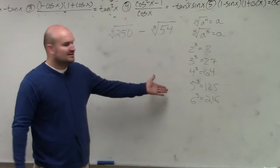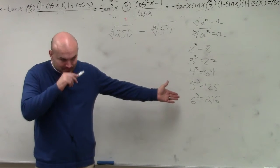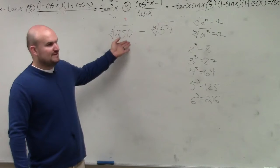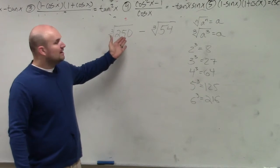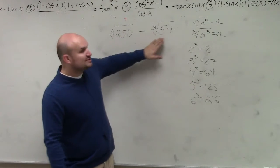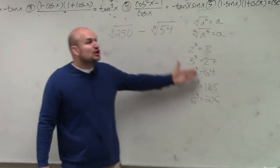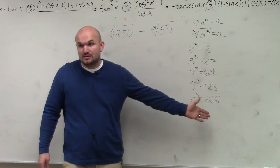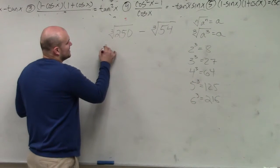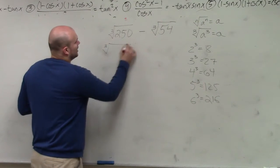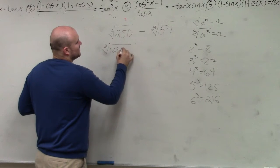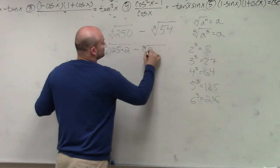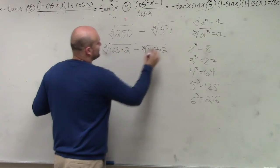No. The next one is 7 cubed, which I don't have memorized, but it's not 250, I can tell you that. However, can I rewrite these two numbers in terms of one of these cube numbers? Yes. I can write this as the cube root of 125 times 2, minus the cube root of 27 times 2.